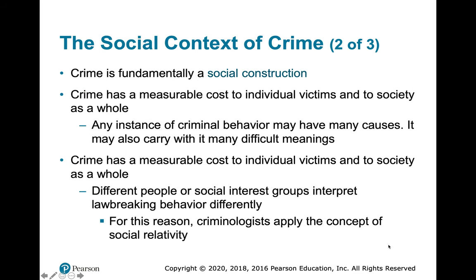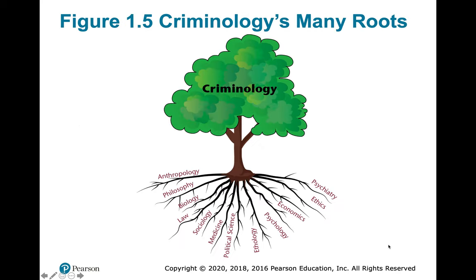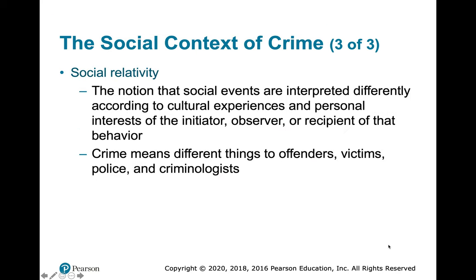Crime is a social construction with a measurable cost and many different causes. Different people and groups can also interpret law-breaking behavior differently. This is called social relativity — the idea that social events are interpreted differently according to the cultural experiences and personal interests of the observer, the recipient, or the initiator of that behavior. Basically, crime means different things to offenders, victims, police, and criminologists.